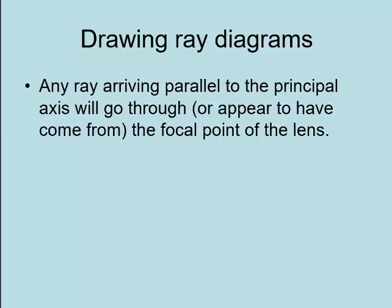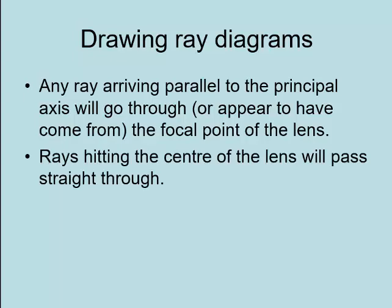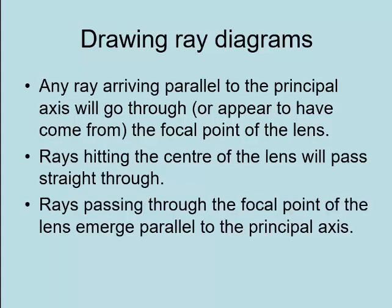To draw ray diagrams, there are simple rules to follow. Any ray arriving parallel to the principal axis — the axis through the centre of the lens — will pass through one of the focal points. There's a focal point on either side of the lens. If a ray hits the centre of the lens, it passes straight through unaffected. Rays that pass through a focal point emerge parallel to the principal axis. In short: parallel rays are linked to the focal point, and rays through the centre pass straight through.